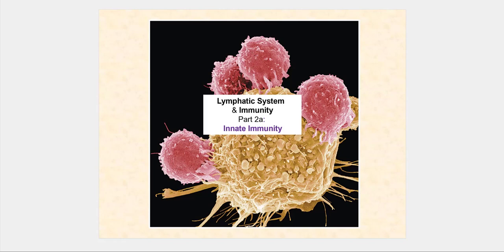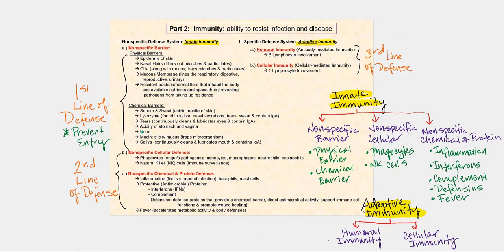Let's continue our journey with the lymphatic system and immunity. Part 2a involves the discussion of innate immunity. Immunity is the ability to resist infection and disease. We divide this into two major types or categories: the non-specific defense system, also referred to as innate immunity, and the specific defense system, also referred to as adaptive immunity.